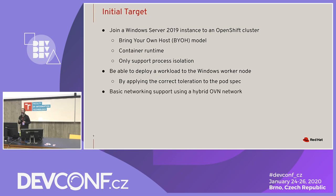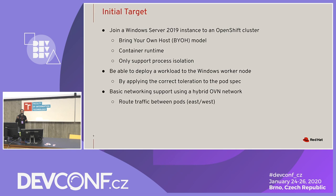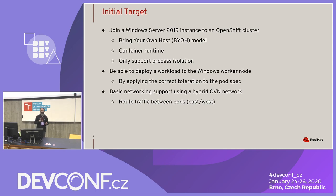You cannot use the default OpenShift SDN network type for Windows workloads. We carve out a piece of the network for Windows communication. This was done not just by Red Hat — we have a partnership with Microsoft, and the OpenShift SDN team worked closely with Microsoft to get all these pieces in place.